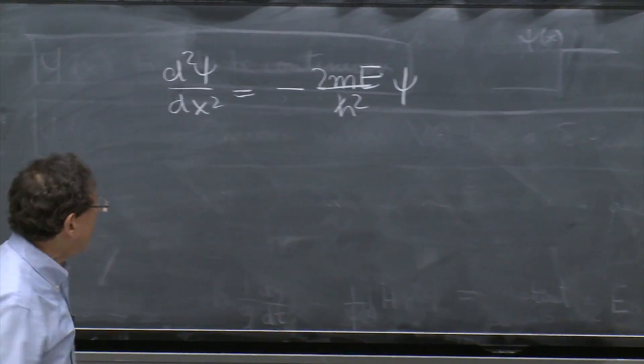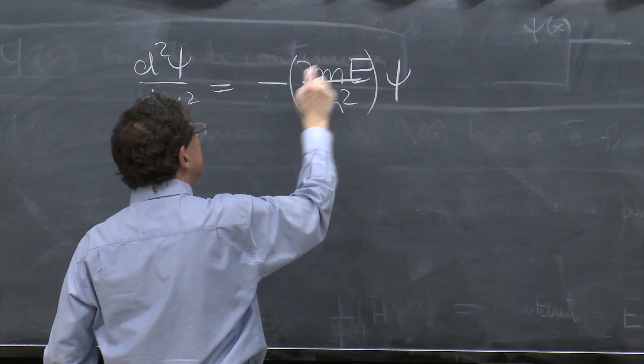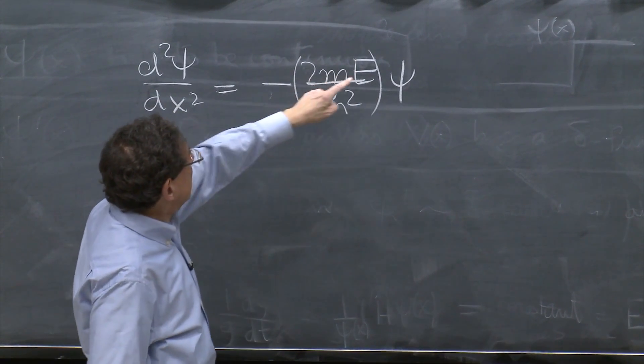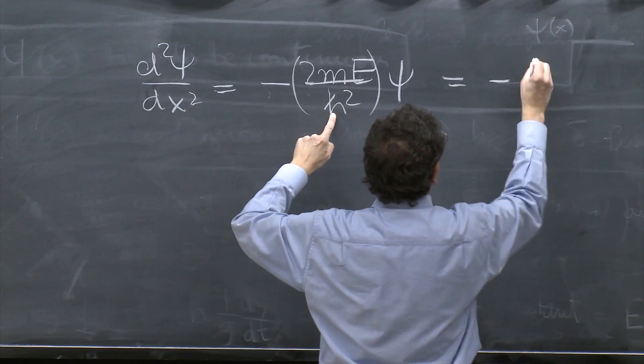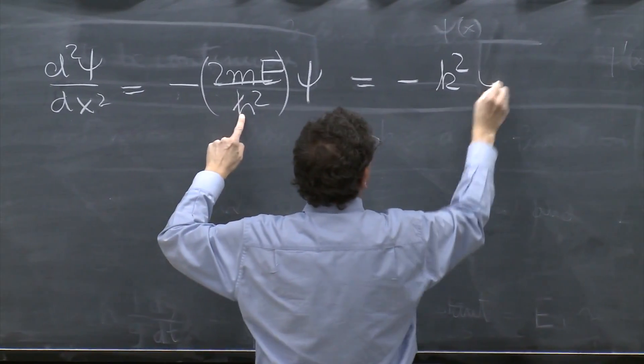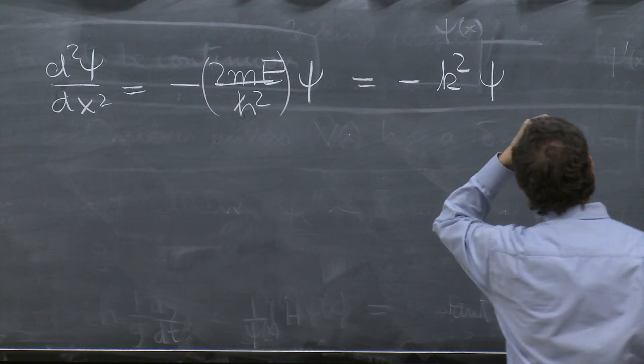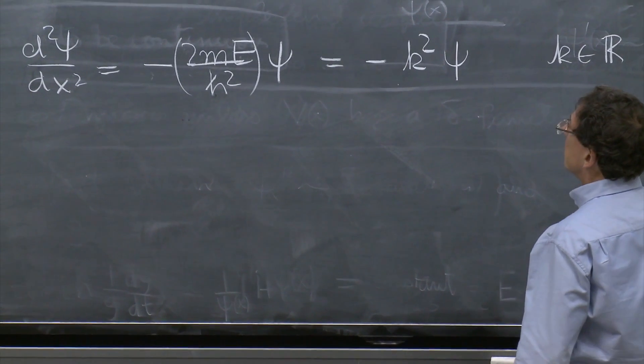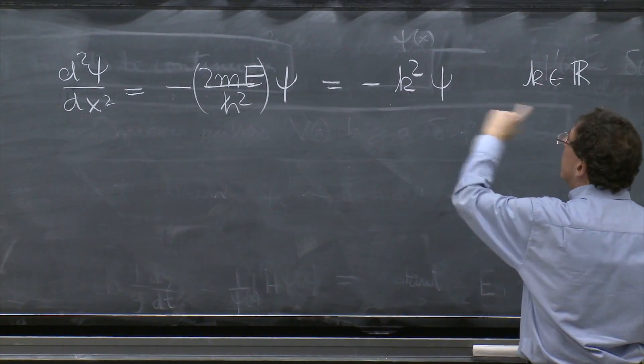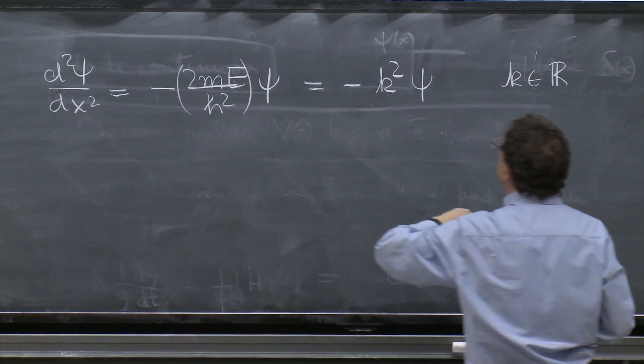And here comes the thing. We always like to define quantities, numbers. If this is a number, and E is positive, this I can call minus k squared ψ, where k is a real number, k real. Because k real, the square is positive. We've shown that the energy is positive.